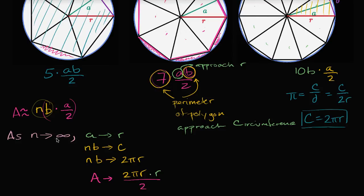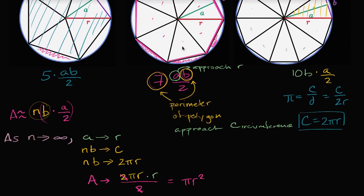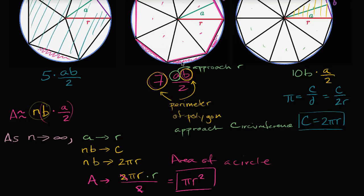As n approaches infinity, with an infinite number of sides and triangles, the area of our polygon approaches nb times a over two — which becomes two pi r times r over two. You have two divided by two, and then pi r times r, which equals pi r squared. So as we approach an infinite number of triangles, we approach the area of the circle, and that area is pi r squared. You can think of it as the area of an infinite-sided polygon inscribed in the circle, which equals the area of the circle.